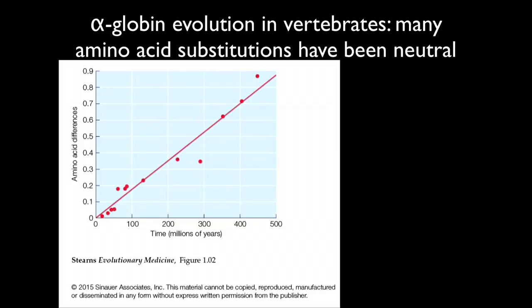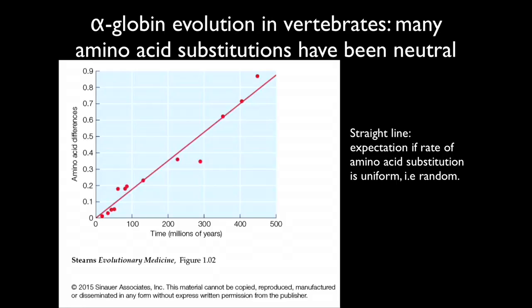Here is an example of what happens when a variant is neutral. Alpha-globin evolution in vertebrates has had many amino acid substitutions. On the x-axis is time in millions of years; on the y-axis, the number of amino acid substitutions. Each data point is a comparison between animals examined today that have been evolving over the last 500 million years. The line is very close to straight, consistent with a uniform rate of amino acid substitution — indicating it's occurring at random. This neutrality occurs in the parts of the alpha-globin molecule where substitutions make essentially no difference to function, not in the functional center where oxygen binding occurs.